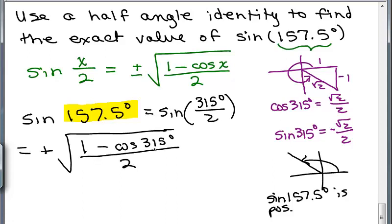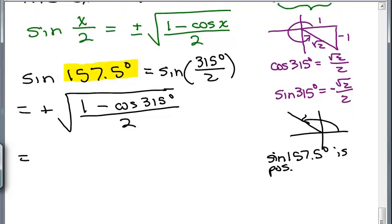All over 2. We need to know the cosine of 315 degrees, which I already wrote over here in purple. We plug that in and simplify. Going down a little, I'm going to leave off that plus sign, don't really need it. In the square root, I've got 1 minus the cosine of 315, which is square root of 2 over 2, so you have square root of 2 over 2, all over 2. Underneath this big square root sign, I now have a complex fraction. Now you have to remember your algebra. How are you going to deal with a complex fraction?